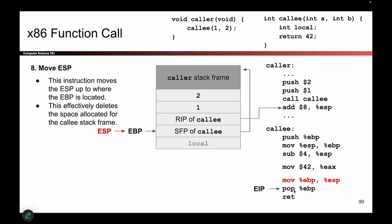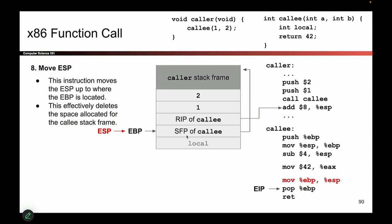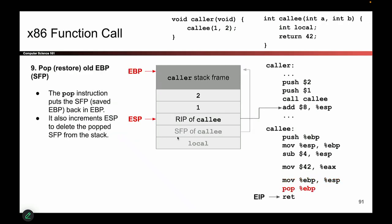That's what the next instruction does: pop EBP. It takes the next value on the stack — the old EBP value — and puts it back in the EBP register. EBP used to be down here; now it goes back to its original place, because I saved it on the stack. And remember, any time you pop something, ESP goes up by four. So now ESP is back up, the stack frame is deleted, and EBP is back to its original place.